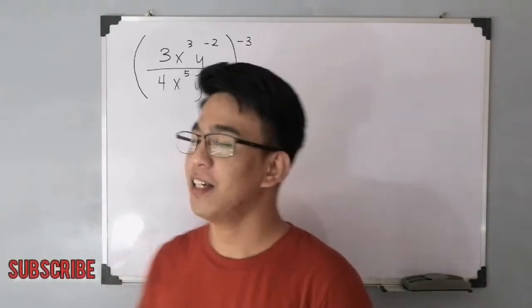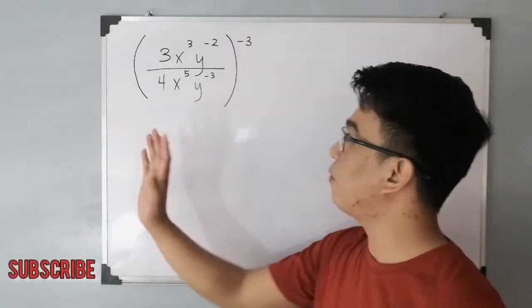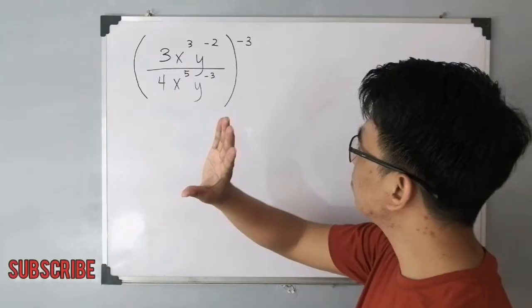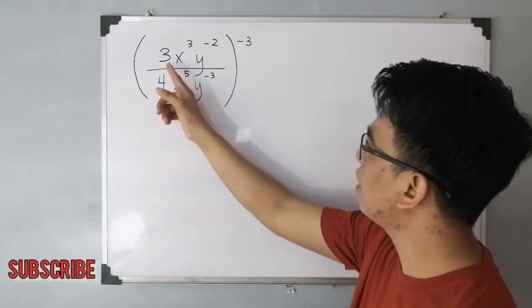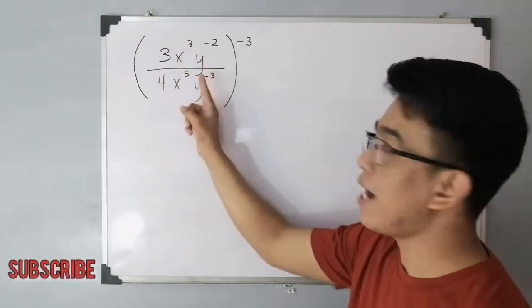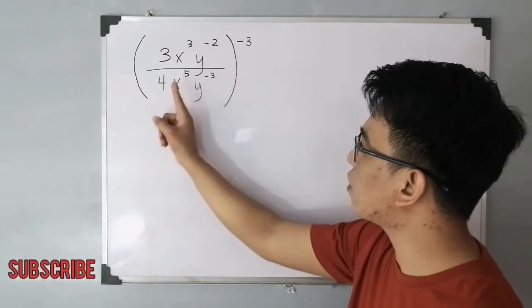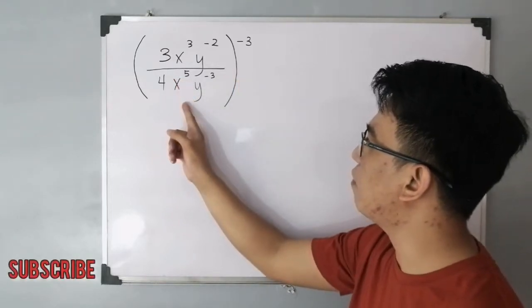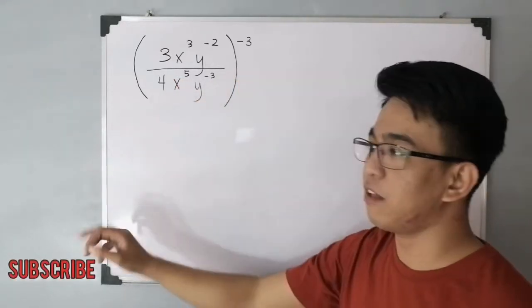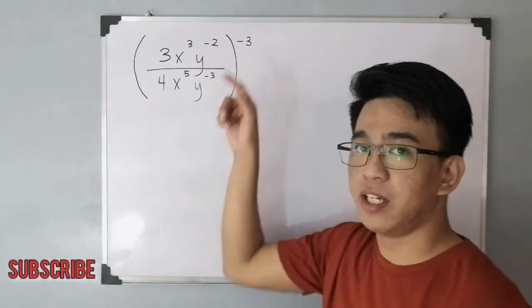Let's do this topic. We are given the expression, we have the quantity of 3x raised to -2, y raised to negative 2, over 4x raised to 5, y raised to negative 3, and raised by negative 3.